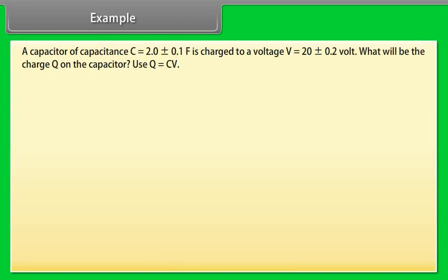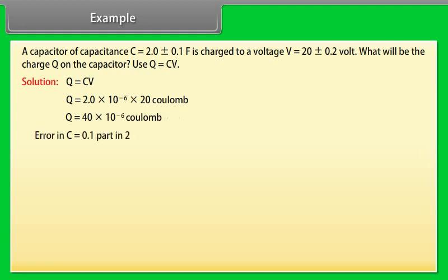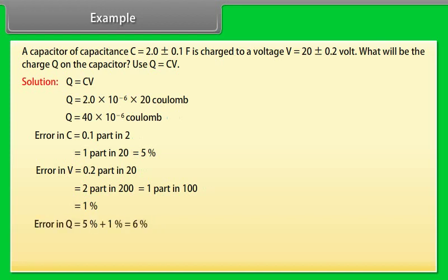Example. Let's take an example of errors. A capacitor of capacitance C equals 2.0 plus minus 0.1 microfarad is charged to a voltage V equals 20 plus minus 0.2 volt. What will be the charge Q on the capacitor? Use Q equals CV. Let us see the solution. Q equals CV. On calculating we get Q equals 40 into 10 to the power minus 6 coulomb. Error in C is equal to 0.1 part in 2, which equals 5 percent. Error in V equals 0.2 part in 20, which equals 1 percent. Error in Q equals 5 percent plus 1 percent, which equals 6 percent. Therefore charge Q equals 40 plus minus 2.4 into 10 to the power minus 6 coulomb.